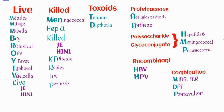Hey everyone, in this video we are gonna learn must-know vaccines and how to remember them in an easy way. The older classification of vaccines includes live vaccines, killed vaccines, and toxoids. But in the newer classification they included proteinaceous vaccines, polysaccharide, glycoconjugate, recombinant, and combination vaccines too.